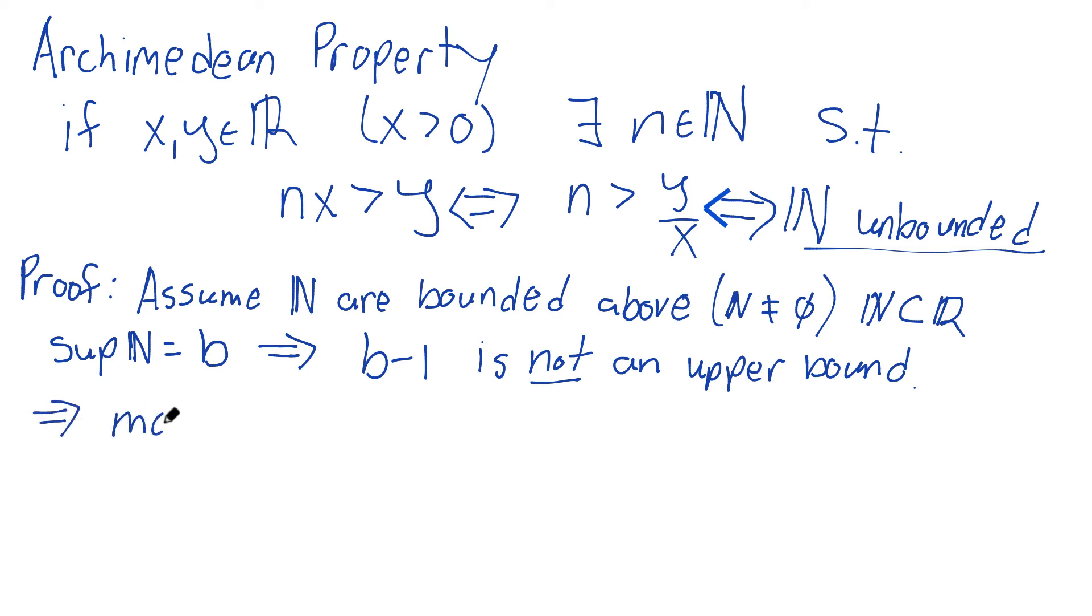there has to be some element of N, that's bigger than this. There exists an m in N such that m has to be larger than this. It has to be larger because I know B minus one is not an upper bound, so something has to be bigger than that.